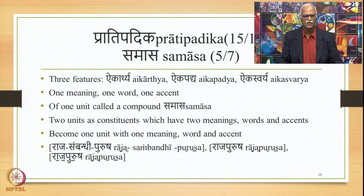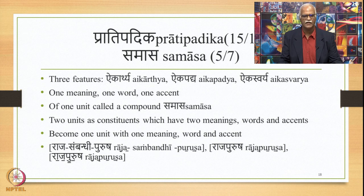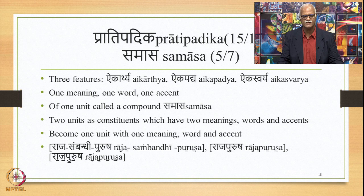There are three features described in the Paninian grammatical tradition for a compound: Aikarthya, Aikapadya, and Aikaswarya — meaning one meaning, one word, and one accent respectively. These three are the features of one unit called a compound or Samasa. So two units in the form of meaning, words, and accents become one unit: for example, Rajasambandipurusha becomes the word Rajapurusha with one accent.